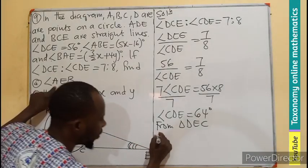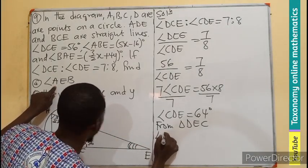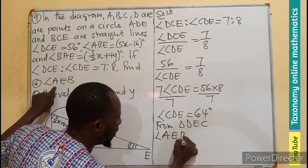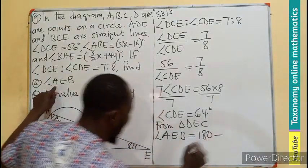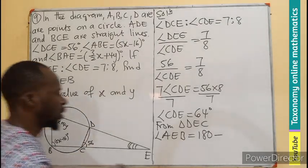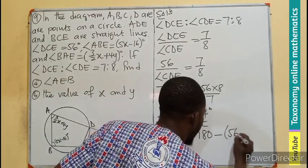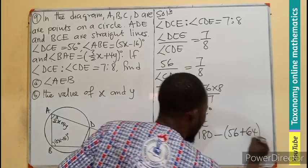the one I'm looking for, the angle AEB is going to be equals to 180 minus the very two angles that I just found. It will be 56 plus 64.